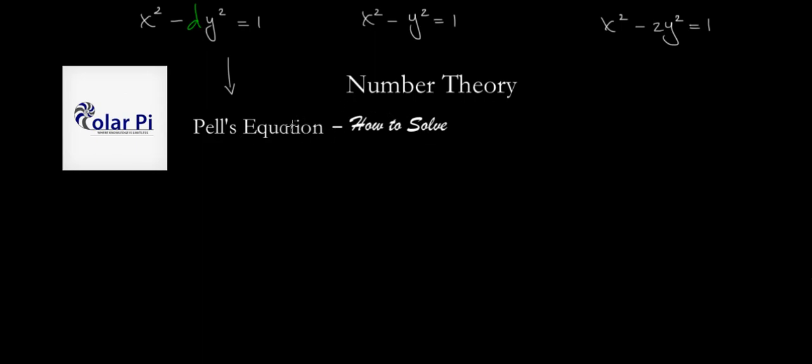Hey guys, welcome. This will be the first of at least three videos on Pell's equation. Pell's equation is an equation of this form: x² - dy² = 1. In this video, I'm going to show you how to solve an equation of this form in general, for any d.